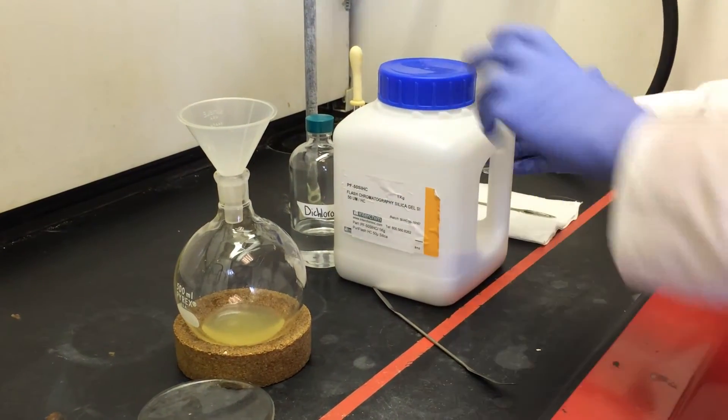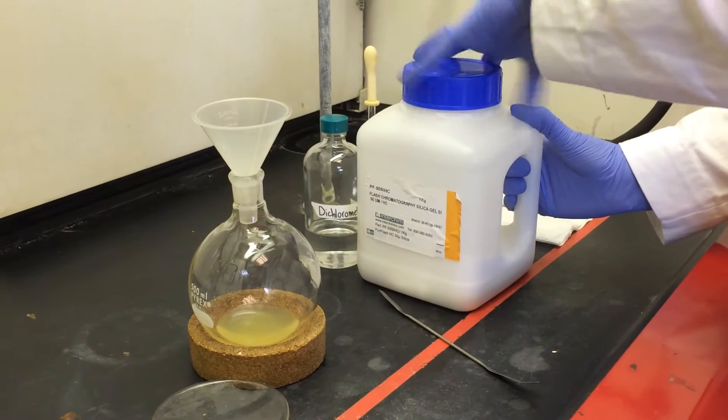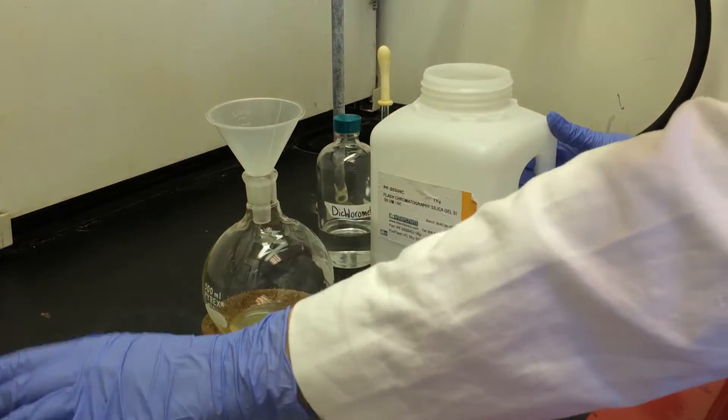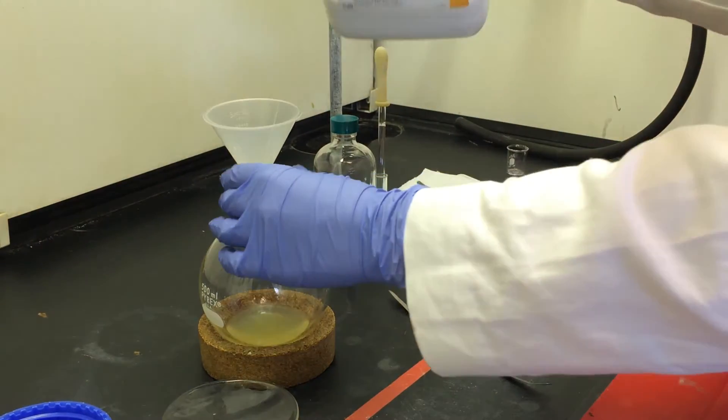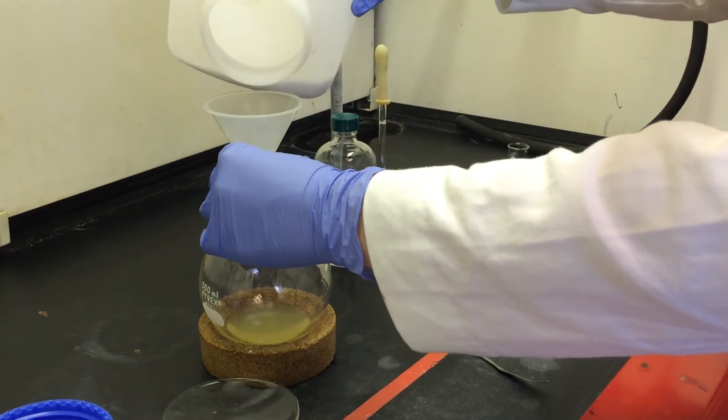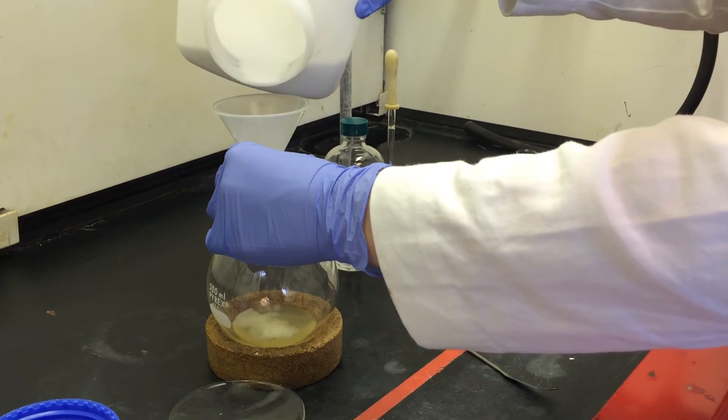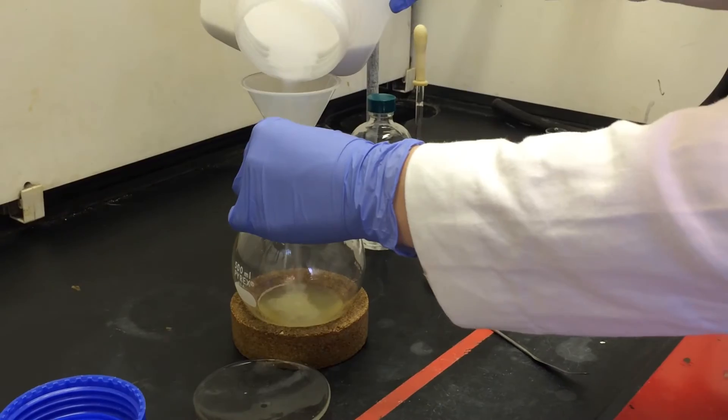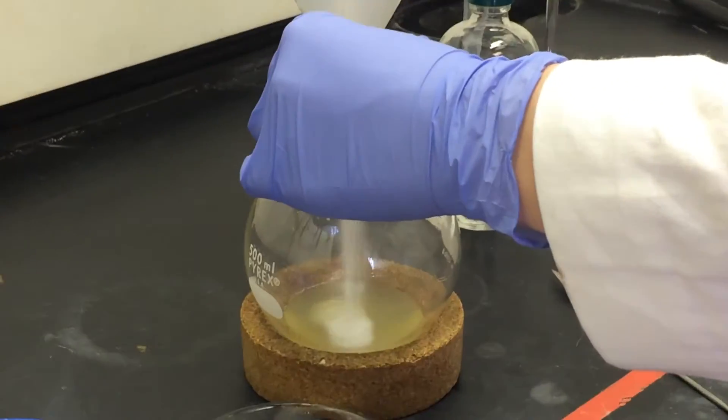When your sample is all dissolved in the dichloromethane, next you add a little bit of silica gel. Make sure you do this in the hood. You do not want to be breathing silica gel. You only want a small amount in your sample. It'll start to look sort of like a slush.